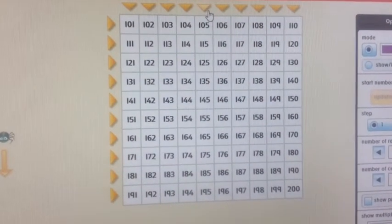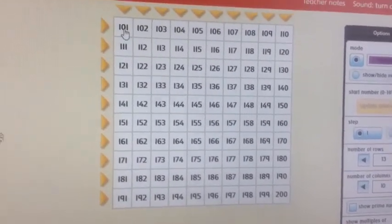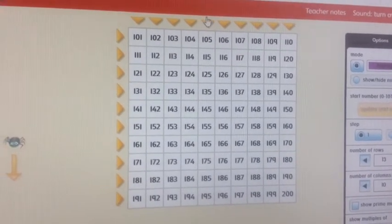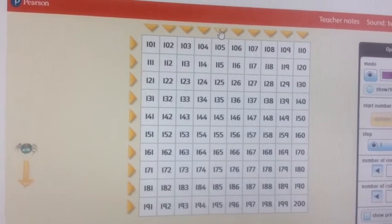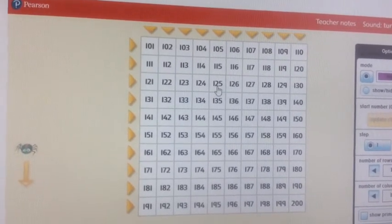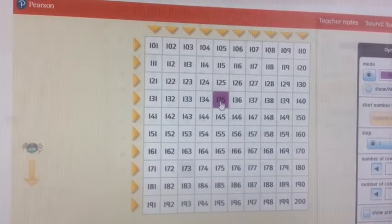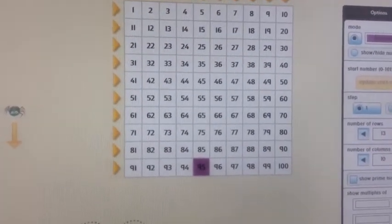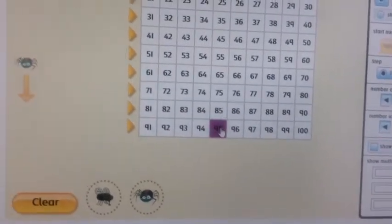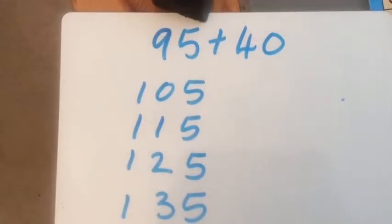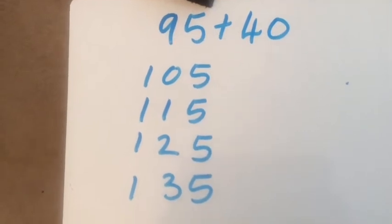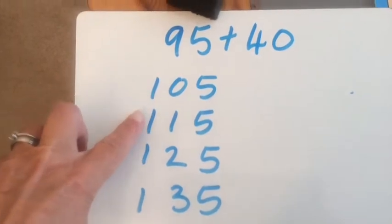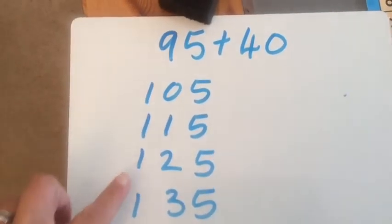Okay, you can see that my number square now goes from a hundred and one all the way down to two hundred. We were here at ninety-five. We're going to add ten, twenty, thirty, forty. Let me show you that by changing the hundred square. Remember we were here at ninety-five. You need to add on ten four times because you're adding forty. So you've added ten here, twenty, thirty, forty.